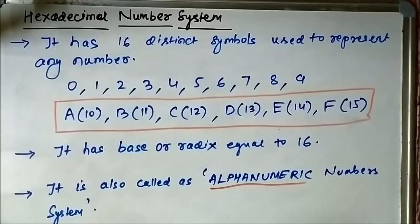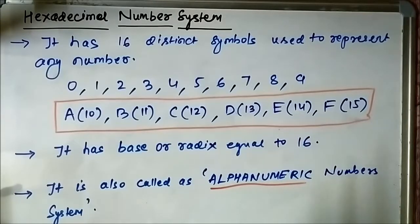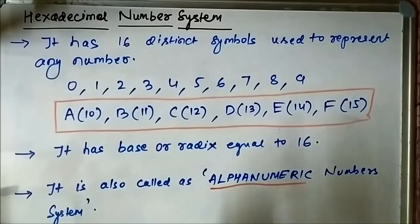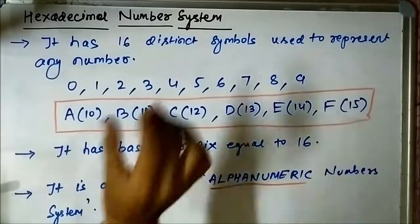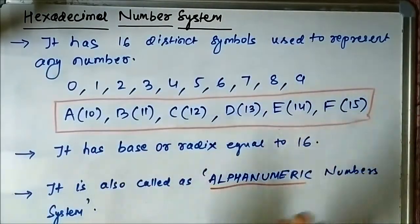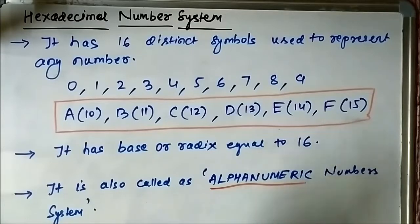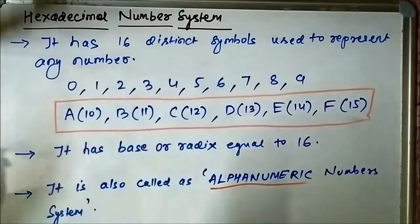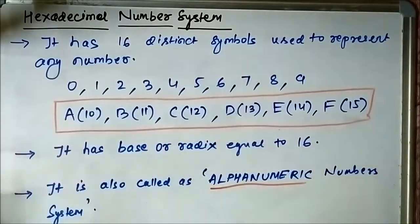Now, the hexadecimal number system is also a positional number system, similar to binary, decimal, and octal. It means that the position of each symbol from this collection in a hexadecimal number will have a certain weight value associated with it, and that weight value depends on the position of that symbol in that number. Let us see how that works.